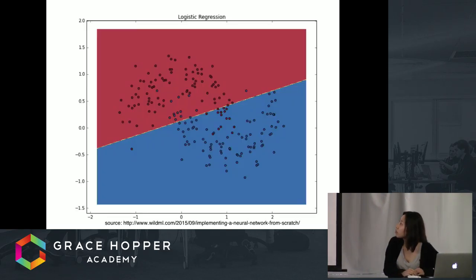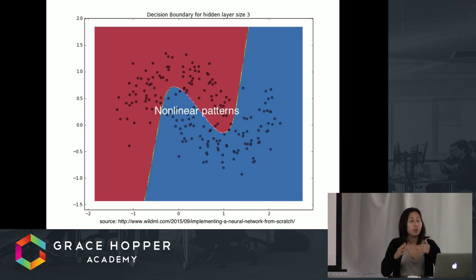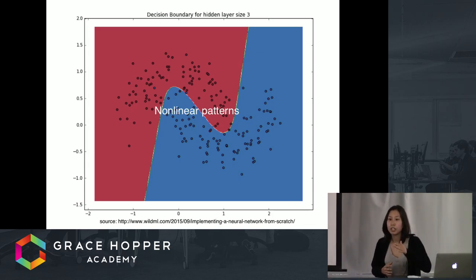This dividing line is pretty good, but if you look at it, we'll see that some got misclassified where the blue dots are in the red zone and the red dots are in the blue zone. Ideally what we want is something like this. This is where neural networks are powerful because they're able to classify non-linear patterns.